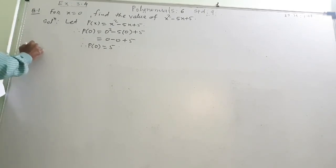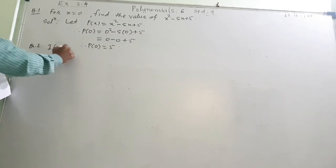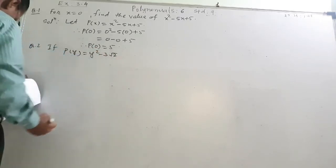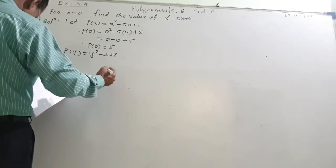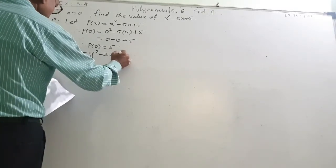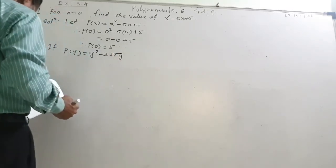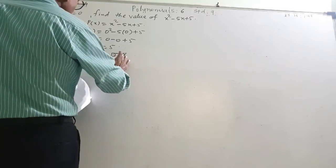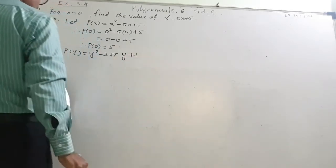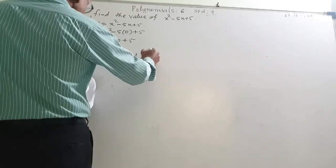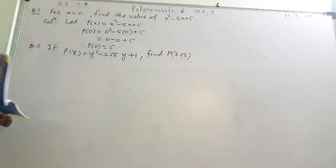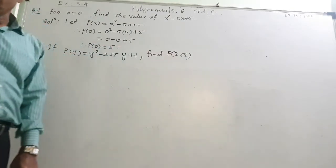Question number 2. If p of y is equal to y square minus 3 root 2 into y — there is some printing problem — plus 1. It should be like this. Then find p of 3 root 2, means find the value of the polynomial when y is equal to 3 root 2. That is the question.